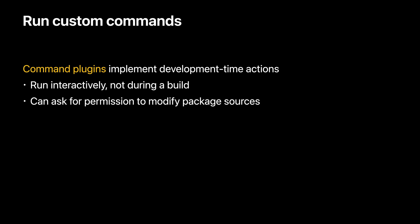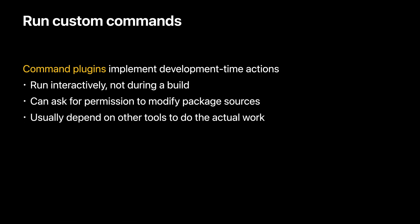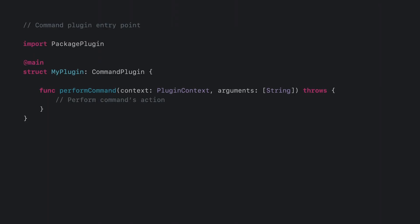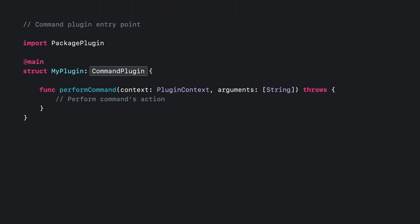Plugins are usually quite small and often depend on other tools to do the actual work. We saw that one of the plugins uses Swift format for all the real work. Dependencies on tool packages can be either binaries or source code. Xcode will build any required tools from source before the command is invoked. Note that the plugin can be provided by a different package than the tool it relies on. In the implementation of command plugins, the main type conforms to the command plugin protocol, and the plugin implements the perform command entry point. This entry point takes a context and any custom arguments provided by the user.